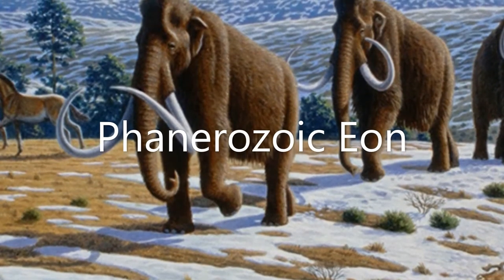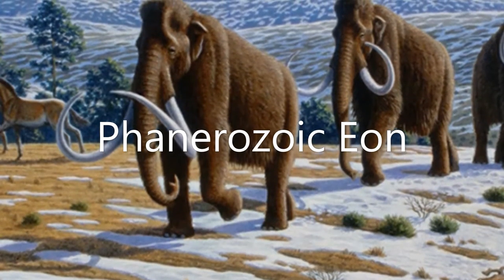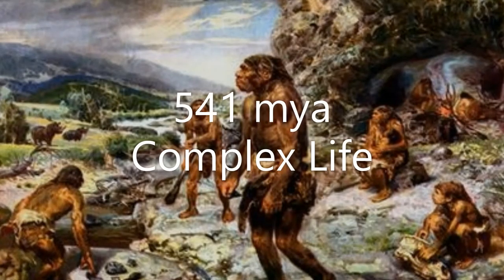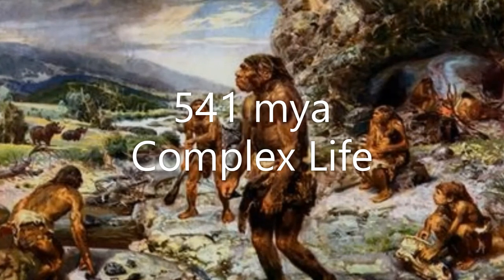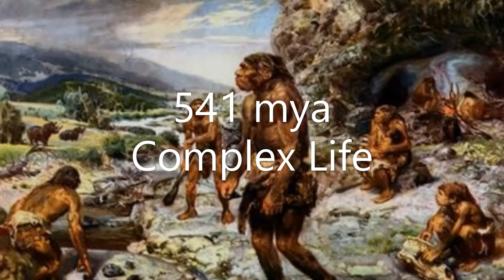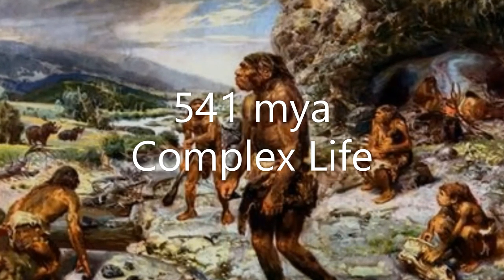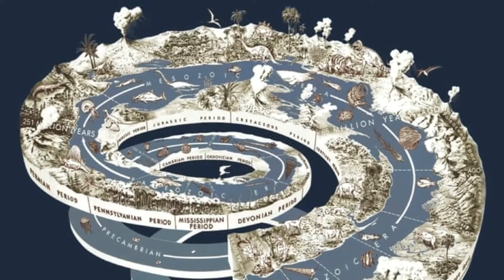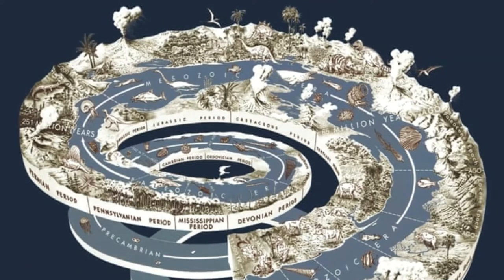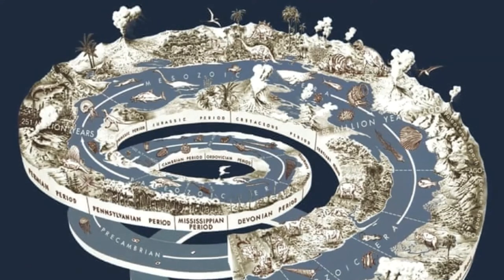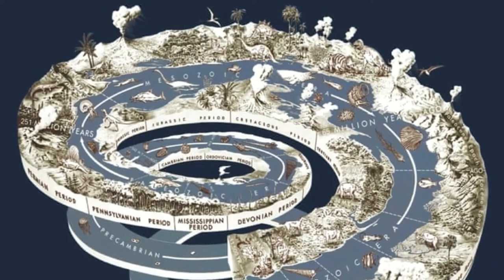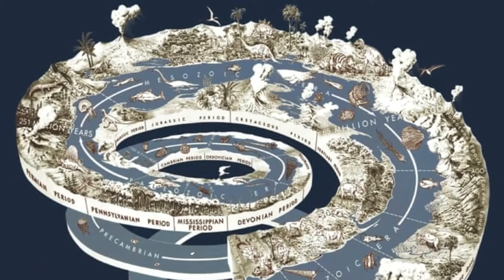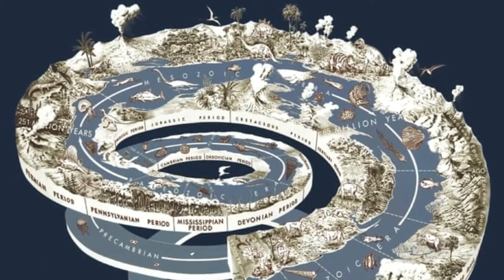Finally, we have the Phanerozoic Eon. It started 541 million years ago and was when complex life arrived. What is interesting is that these Eons end and begin with something massive, for example, oxygen entering the air.